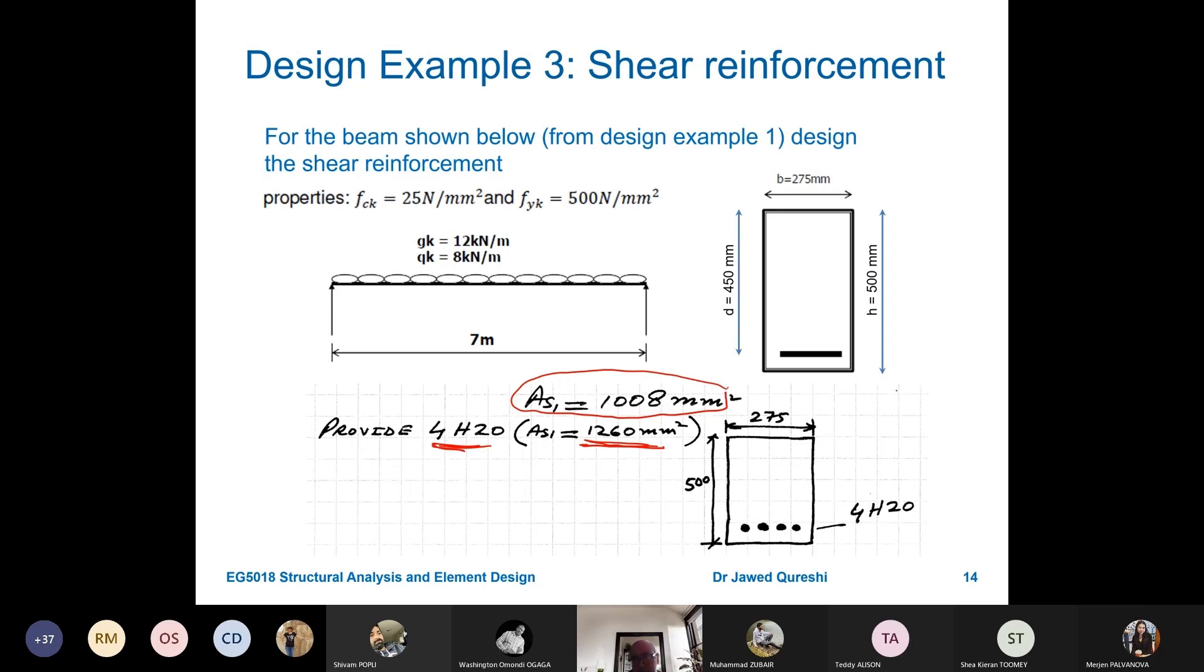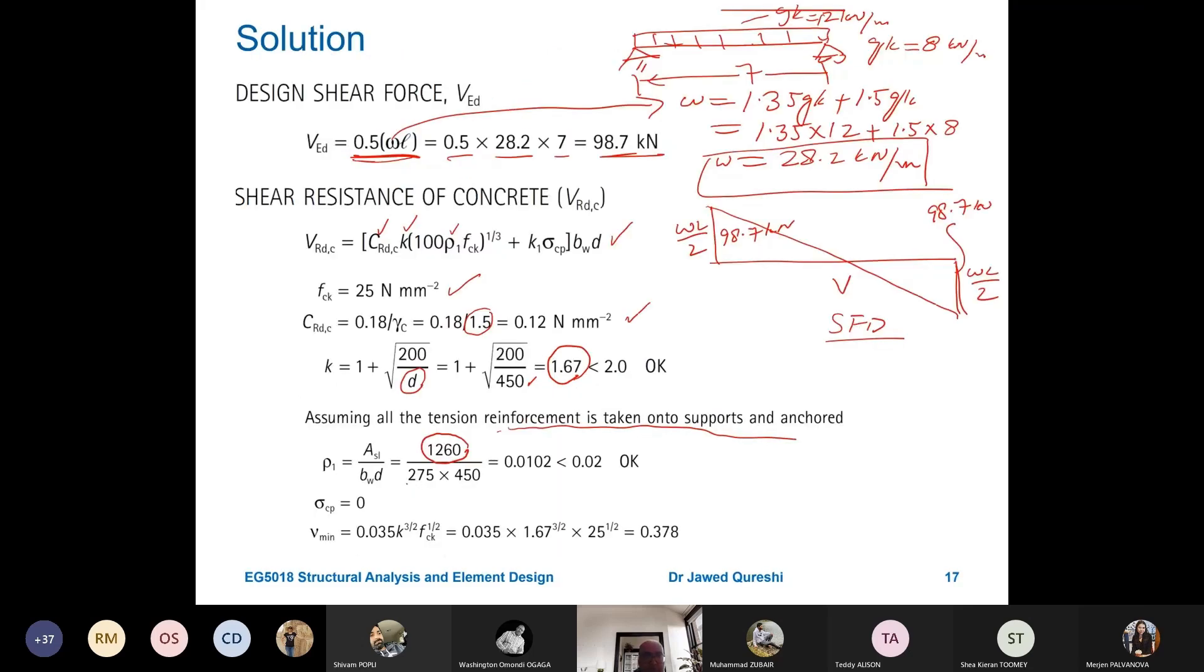So, if I go back here, the required area was 1008, provided area due to 4H20 was 1260. So, here we will use the one that we have provided which is 1260. And again, just if you're wondering where did I get these results from, these are from example 1 in singly reinforced beam where we designed the beam for tension. Now, again, if you put these values B is the width of the beam, D is the effective depth of the beam, you're getting 0.0108. This should be less than the maximum value of 0.02. It means that this is fine.